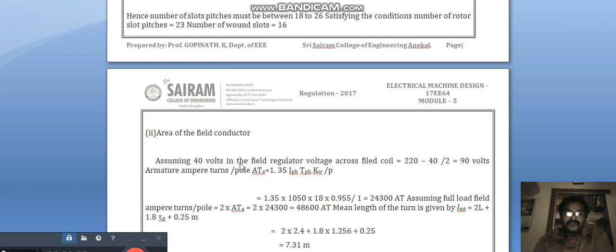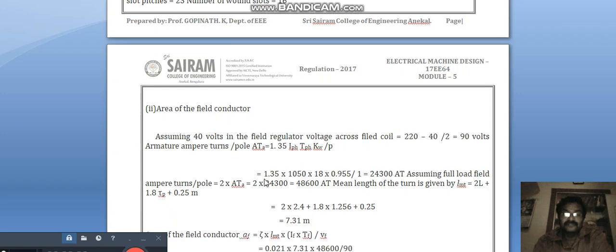Area of field conductor: Assume 40 volt in the field regulator. Voltage across field coil is equal to (220 - 40) / 2, so 90 volts. Armature ampere turns per volt AT_a is equal to 1.35 × I_phase × T_phase × kw / p. When you substitute the value of 1.35 into 1050, 1.95, 24,380 is the specific electric loading value.